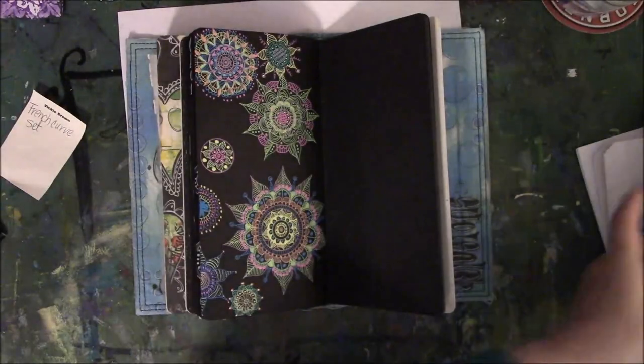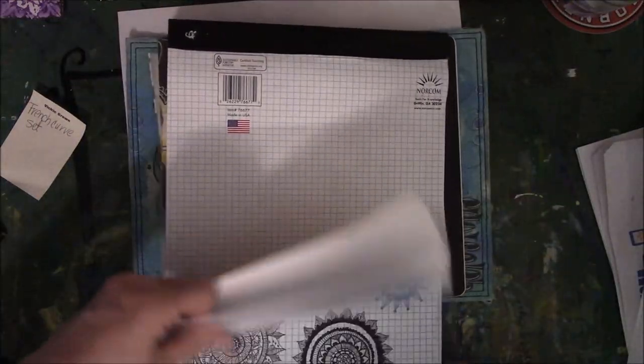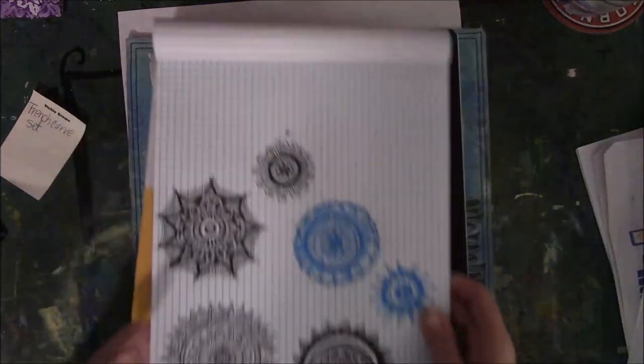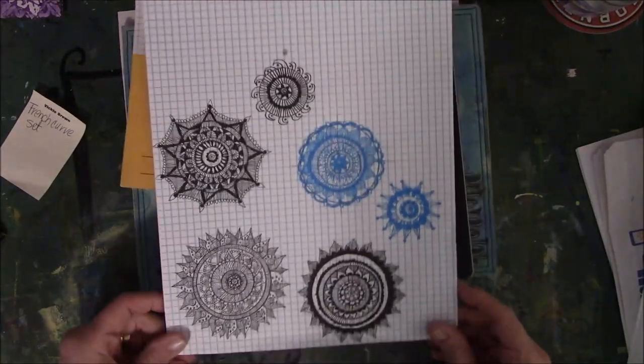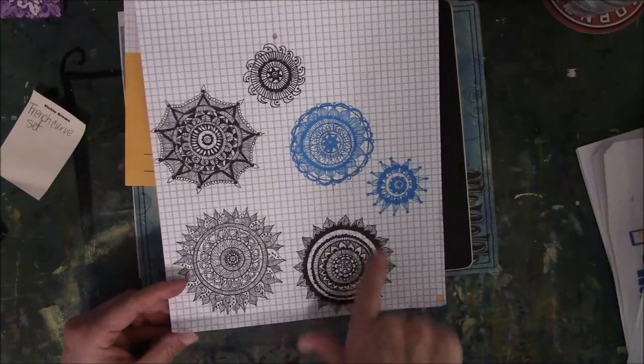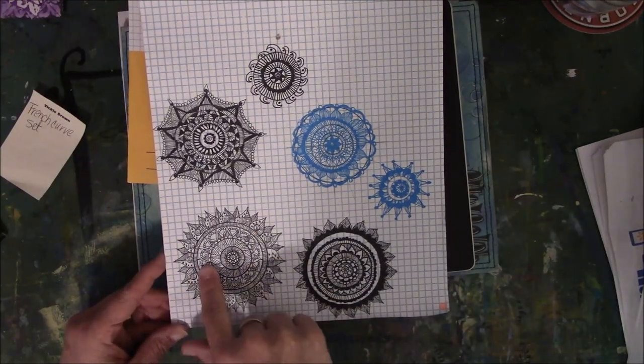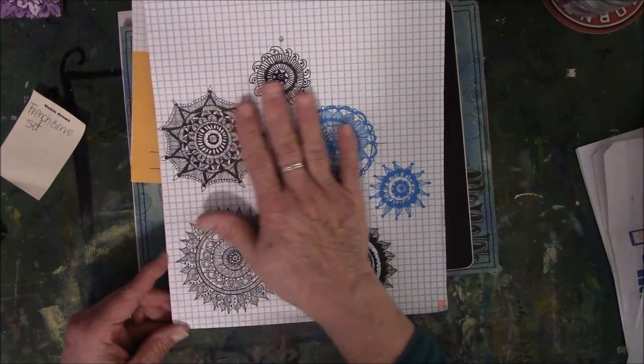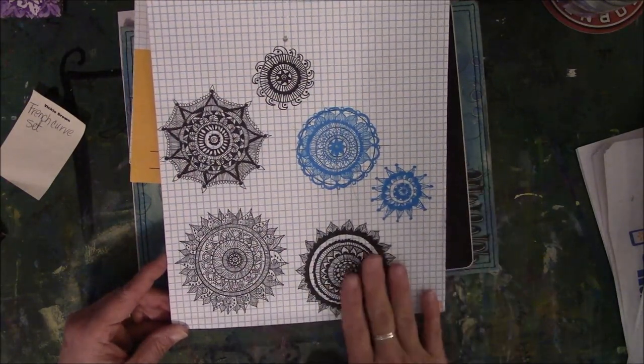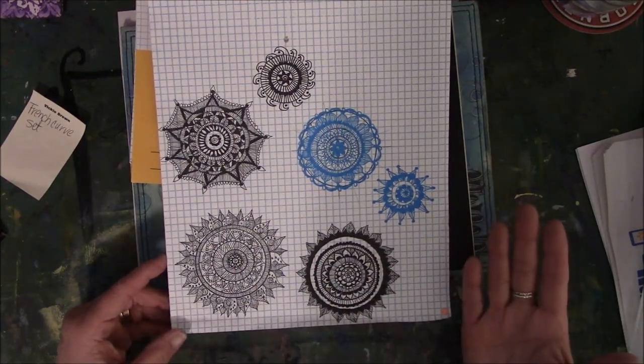Let me show you this one. These again were also done with the circular templates that I showed you. All these concentric circles in here were done with that. I did not freehand any of these, because I can't. They look terrible when I do them.